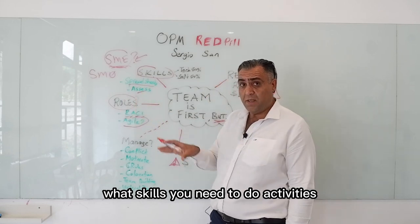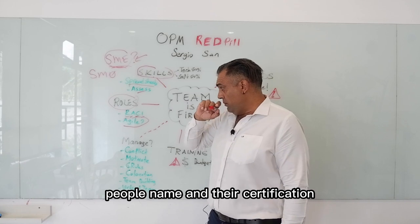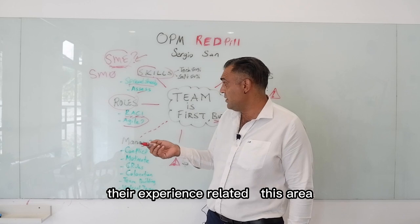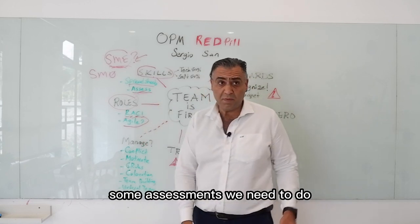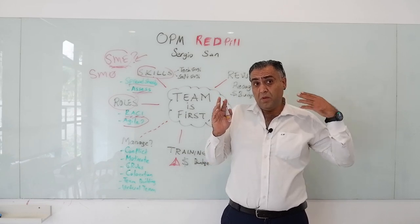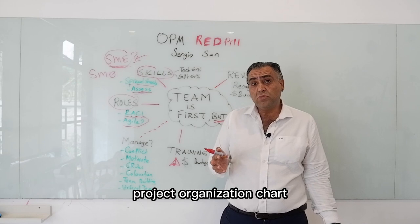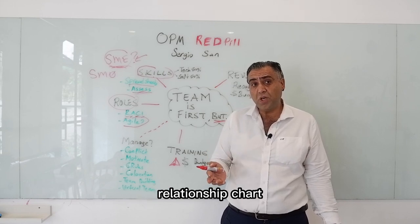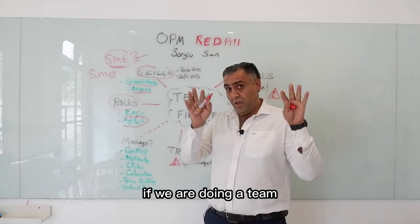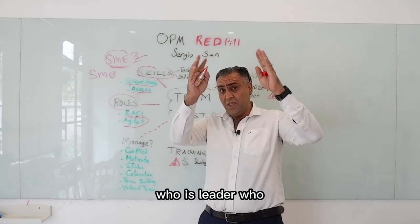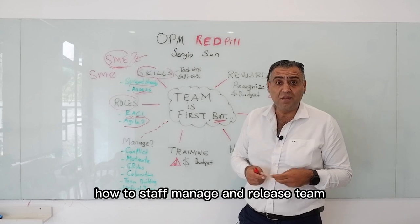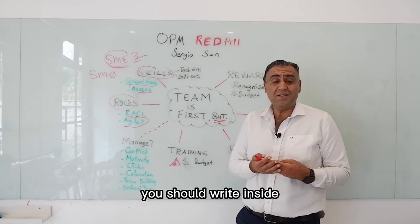List what skills you need to do the activities. Include people's names, their certifications, and their experience related to each area. Assess them — some assessments need to be done. Also create a project organization chart showing reporting relationships: who is leader, who are workers and executors. Document how to staff, manage, and release the team inside the resource management plan.